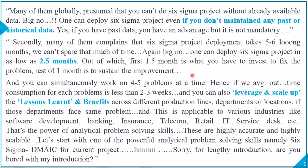Many people globally presume that you cannot do a Six Sigma project without already available data — the answer is a big no. One can deploy a Six Sigma project even without any past or historical data. If you have past data, you have an advantage, but it is not mandatory — that's a myth. Secondly, many complain that Six Sigma project deployment takes five to six long months — again, big no. One can deploy a Six Sigma project in as low as 2.5 months, of which the first 1.5 months is how to invest to fix the problem, and the rest one month is to sustain the improvement — your control phase.